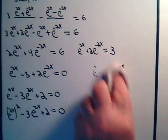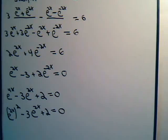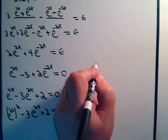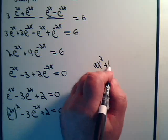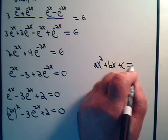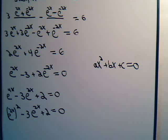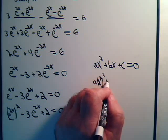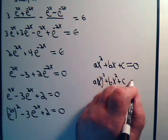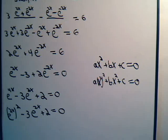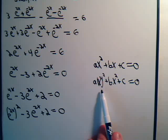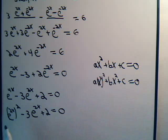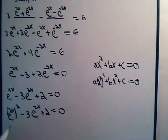A quadratic equation looks like ax^2 + bx + c = 0. If instead we had a(x^2)^2 + b(x^2) + c = 0, we can solve for x^2 using the quadratic formula. That's exactly what we have here — we can solve for e^(2x) using the quadratic formula.